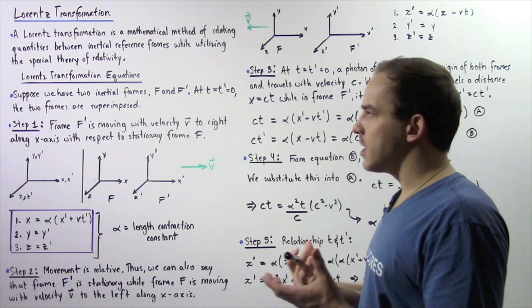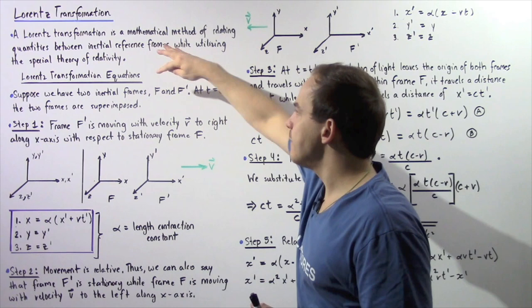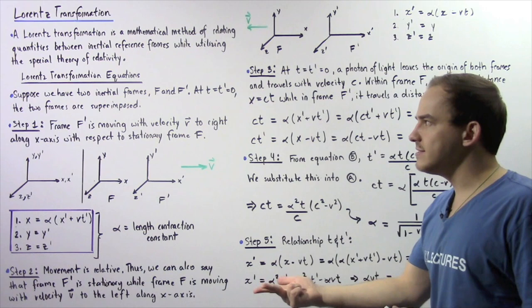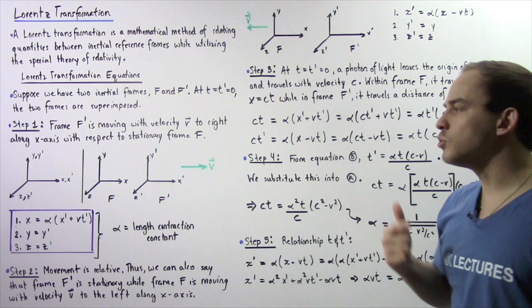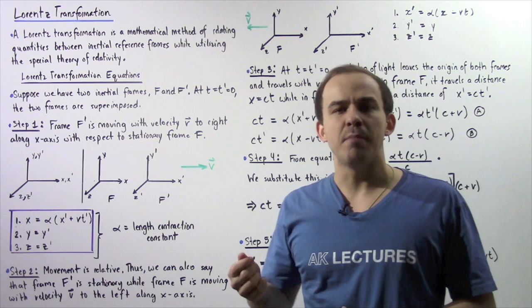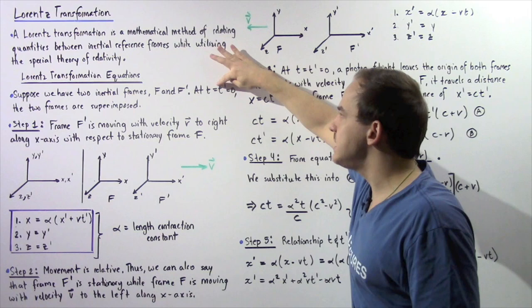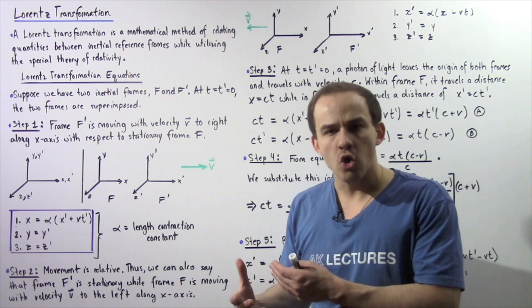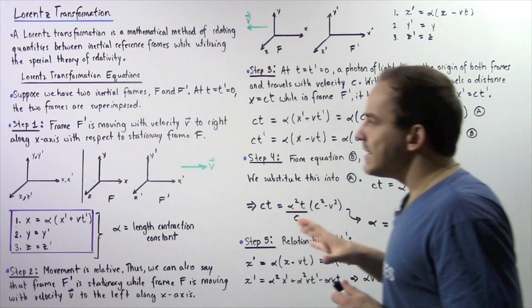Let's begin by making the following assumption. Suppose we have two inertial frames, f and f prime. Frame f consists of x, y, and z axes, and frame f prime consists of x prime, y prime, and z prime axes. The time in frame f is given by t, while the time in frame f prime is given by t prime. We're assuming that at t equals t prime equals zero seconds, the two frames are superimposed — they are found at the same exact position.